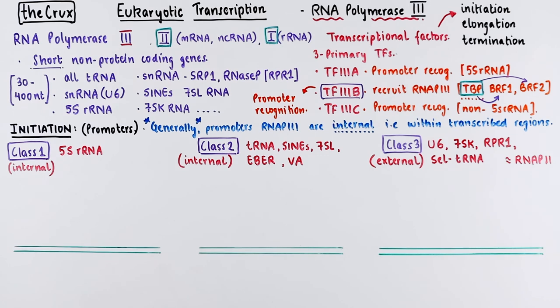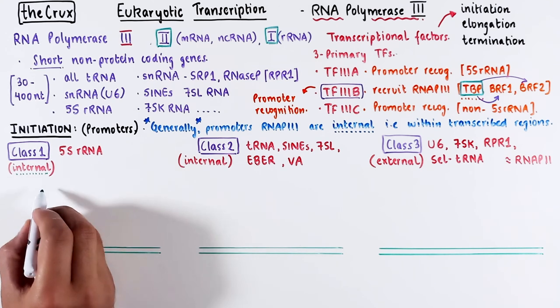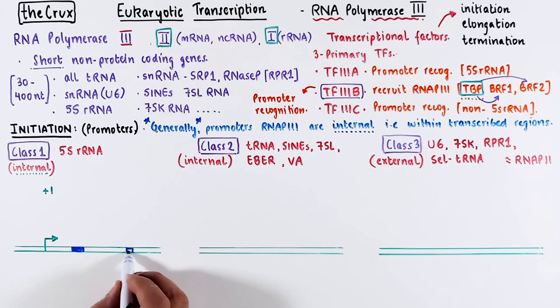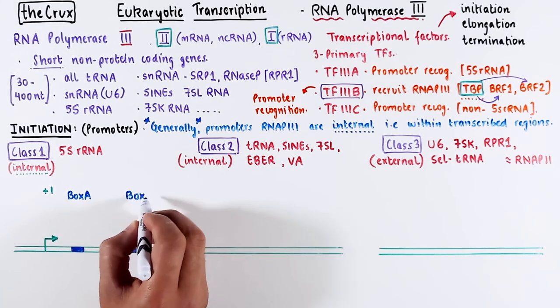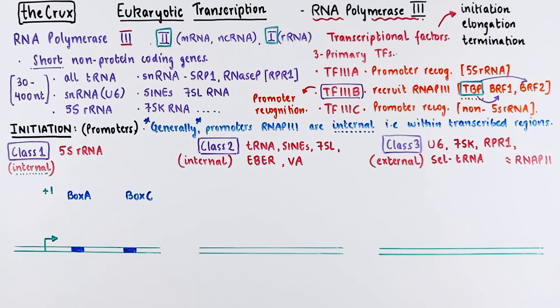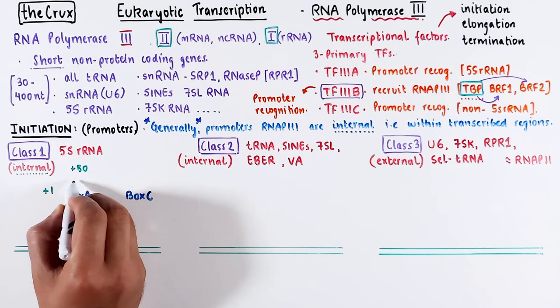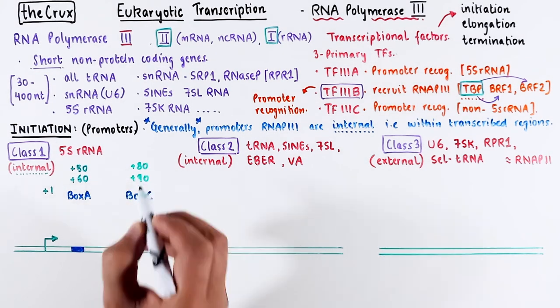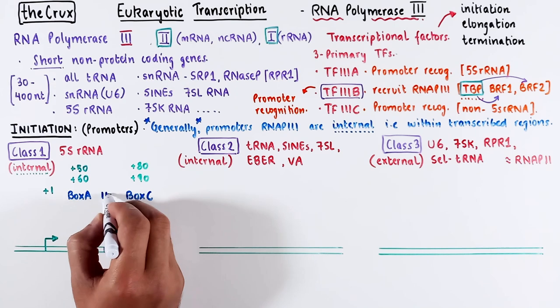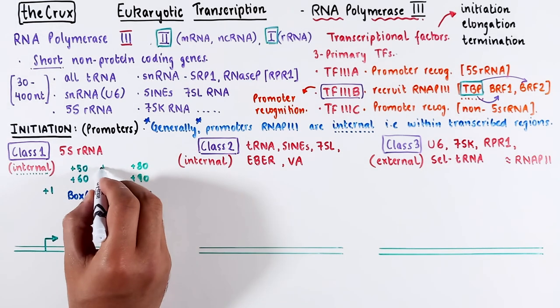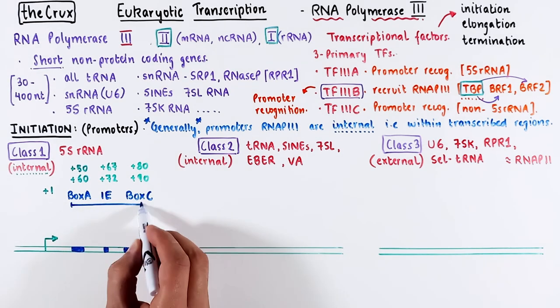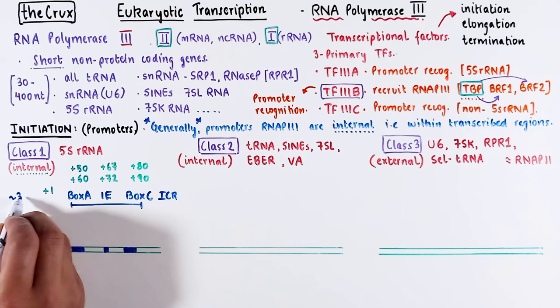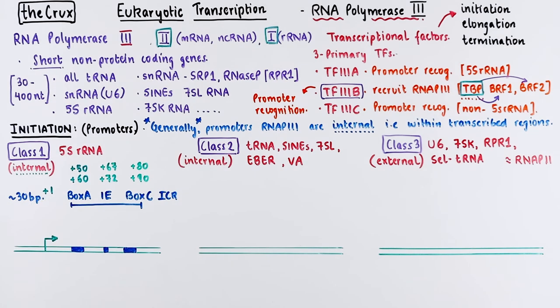Let's take a closer look at what it means for a promoter to be internal. Imagine this arrow represents the plus 1 site or the transcriptional start site. Class 1 promoters consist of two short boxes, box A and box C, positioned just downstream of the plus 1 site. Box A is typically found around position 50 to 60, while box C resides at position 80 to 90. In between them, there's often an intermediate element at approximately plus 67 to plus 72. The entire promoter region is quite compact, spanning only about 30 bases, and is known as the internal control region.